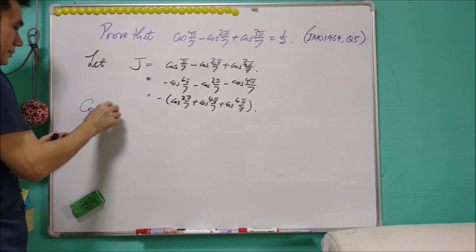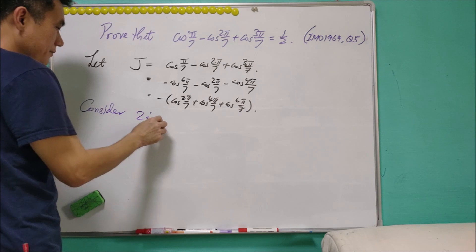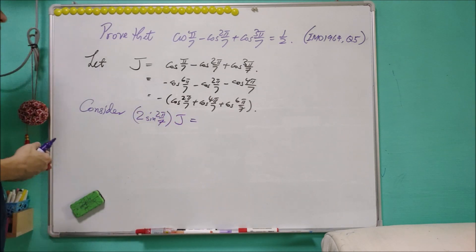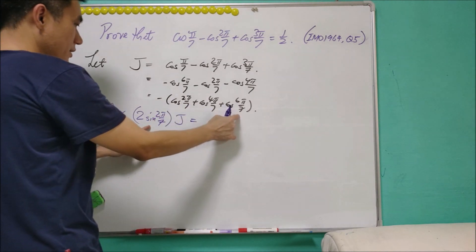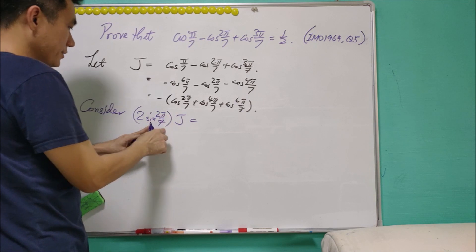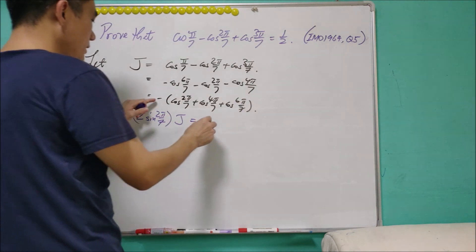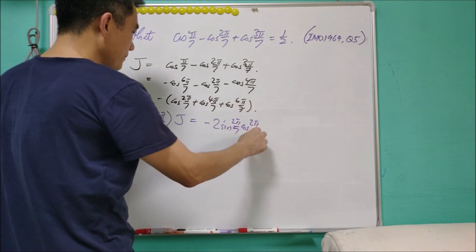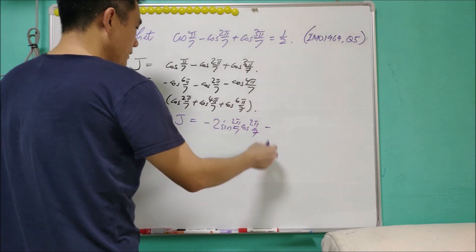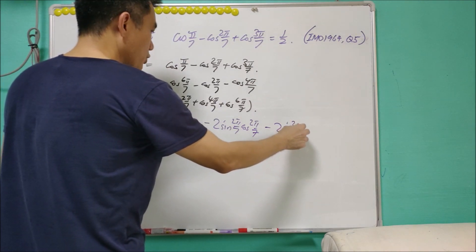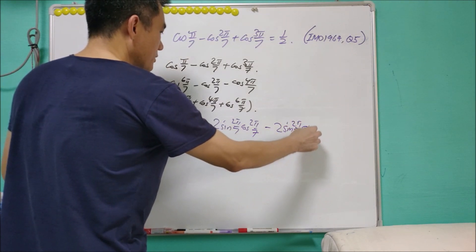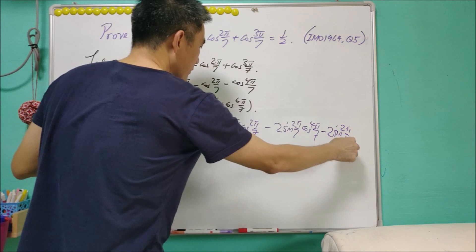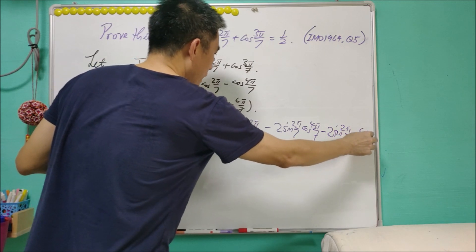Now we will consider 2sin(2π/7) times J. Each of the terms will multiply with 2sin(2π/7), giving us negative 2sin(2π/7)cos(2π/7) minus 2sin(2π/7)cos(4π/7) minus 2sin(2π/7)cos(6π/7).